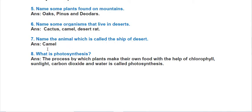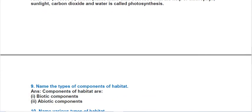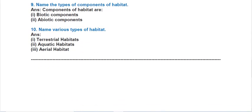The animal called the ship of the desert is the camel. Next: what is photosynthesis? Photosynthesis is the process by which plants make their own food with the help of chlorophyll, sunlight, carbon dioxide, and water. With this we have finished most of the questions.